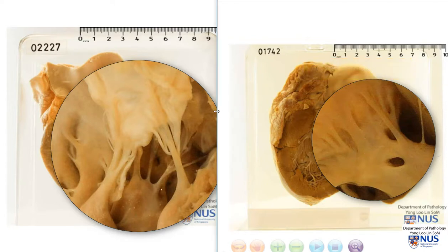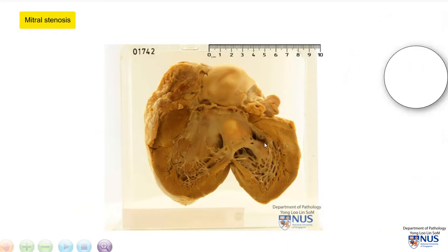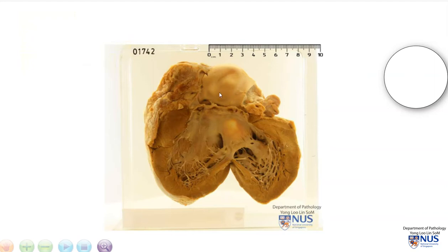You can see that the chordae tendineae are actually quite delicate and they are composed of individual strands, as opposed to here, where some of them are actually fused with each other. Hence, this is an example of mitral stenosis as well, and this is a result of rheumatic heart disease. In rheumatic heart disease, there is an acute phase where there is damage to the endocardium, often also the myocardium and even the pericardium. In the endocardium, there can be damage to the valves, and this eventually results in fibrosis, thickening, and sometimes fusion of the cusps of the valve, and also the chordae tendineae, as we see here.